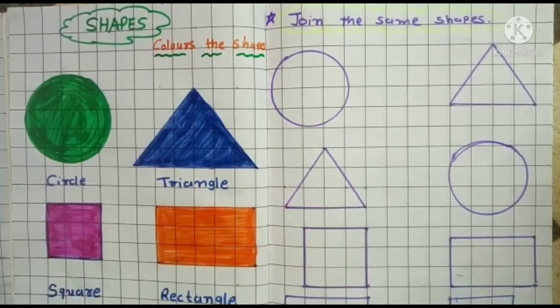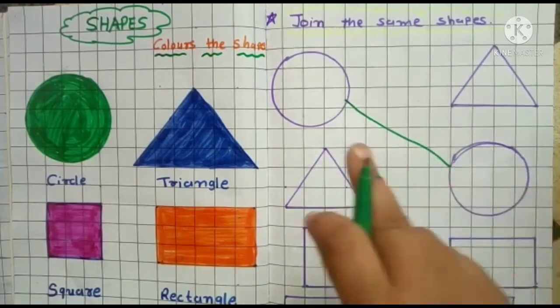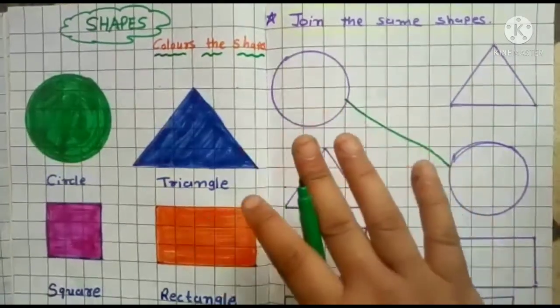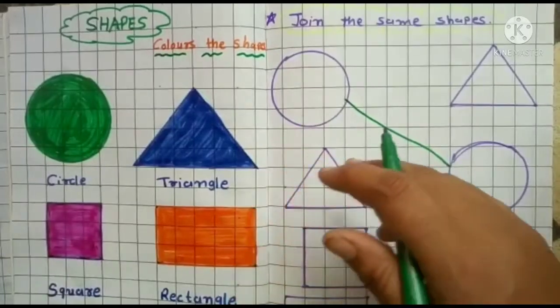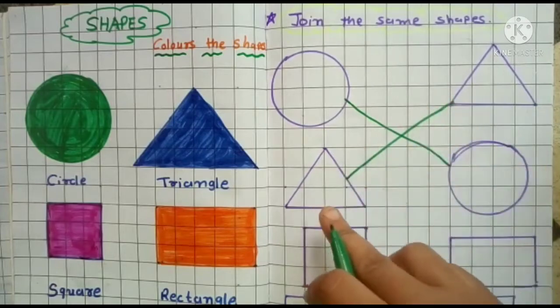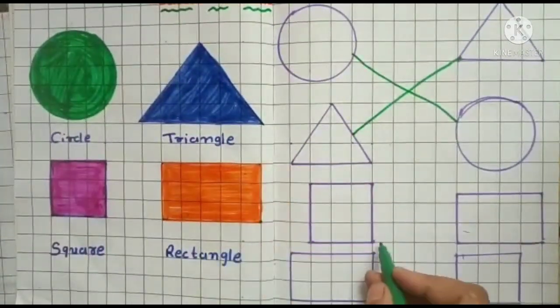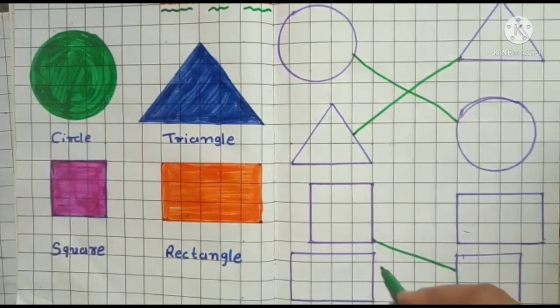Join the circle. Yes. Same circle. Now join the triangle. Same to same. Okay, student. Join the square. And join the rectangle.